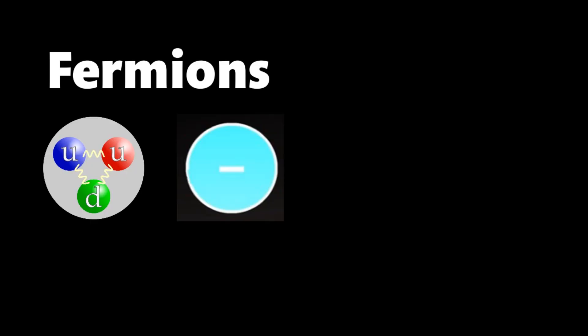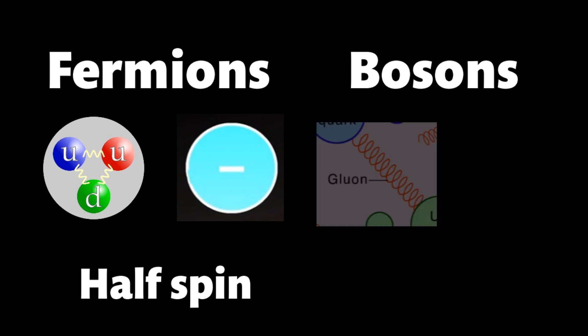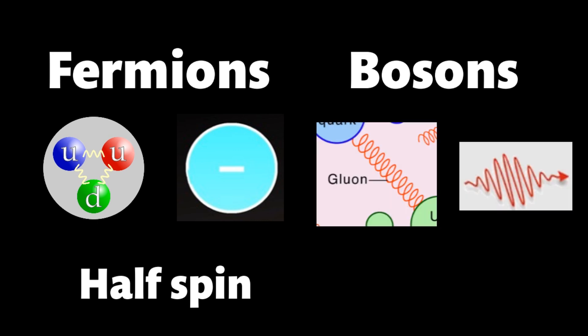Fermions, like quarks and electrons, have a half number spin, while bosons, like gluons and photons, have a whole number spin.